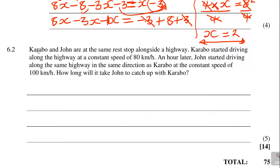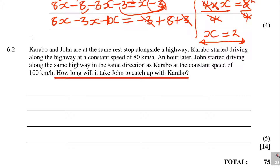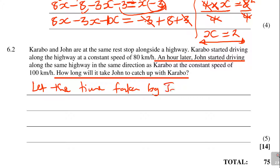Next question is 5 marks. Garabo and John are at the same rest stop alongside a highway. Garabo started driving at a constant speed of 80 kilometres per hour. An hour later, John started driving along the same highway in the same direction at a constant speed of 100 kilometres per hour. How long will it take for John to catch up with Garabo? Let the time taken by John be equal to x.